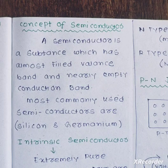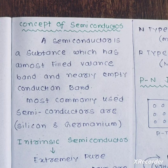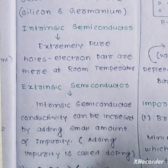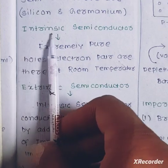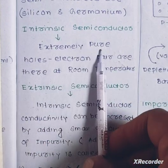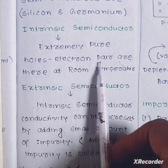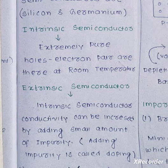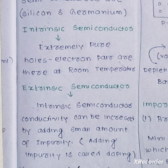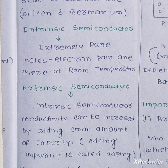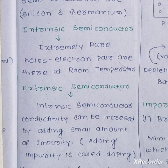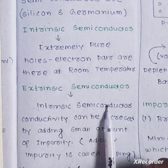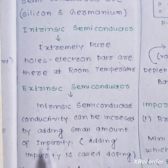Now we are going to divide semiconductors into types. First is the intrinsic semiconductor. An intrinsic semiconductor is a pure semiconductor material in which electron and hole pairs exist at room temperature. In its pure state, the current flowing is very small.